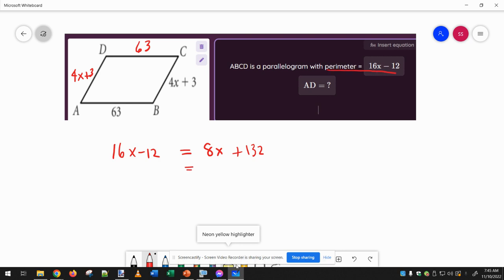Now I can get x's on the same side if I subtract 8x over to the left, just to keep my x's positive. And then if I add 12 over to the left, that's going to cancel this out and this out. And then I have 144 over here, and then I can divide both sides by 8. And 144 divided by 8 is 18.